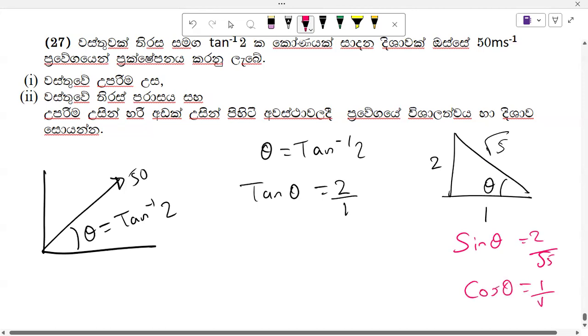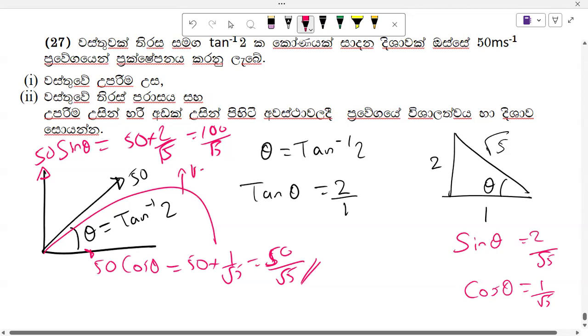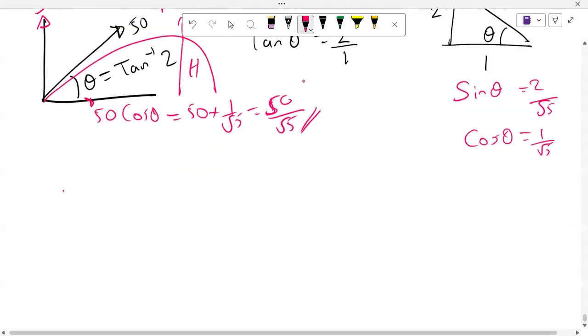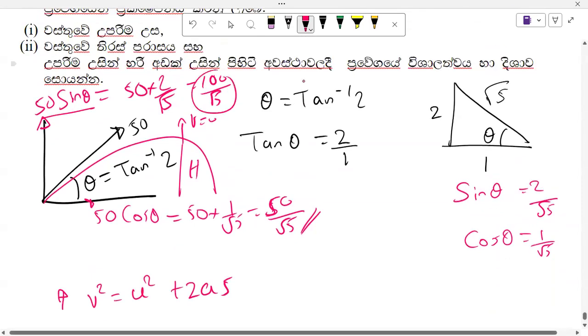Now let's calculate the trigonometric values. We have sin θ equals 2 over root 5, and cos θ equals 1 over root 5. These values come from our triangle where tan θ equals 2.